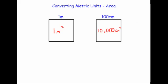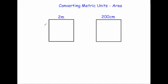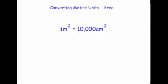So one meter squared is the same as 10,000 centimeters squared. Let's check with another square — here we've got two by two meters, or 200 centimeters by 200 centimeters, which is exactly the same square. Two meters times two meters is four meters squared, and 200 centimeters times 200 centimeters is 40,000 centimeters squared. Again, four meters squared equals 40,000 centimeters squared, confirming that one meter squared is 10,000 centimeters squared.